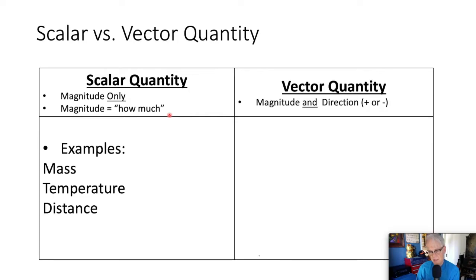It doesn't tell us anything about the direction. Some examples are mass and temperature. Those two, talking about direction doesn't really make any sense. We'll talk about distance in just a moment. That's one of our first descriptors of motion.